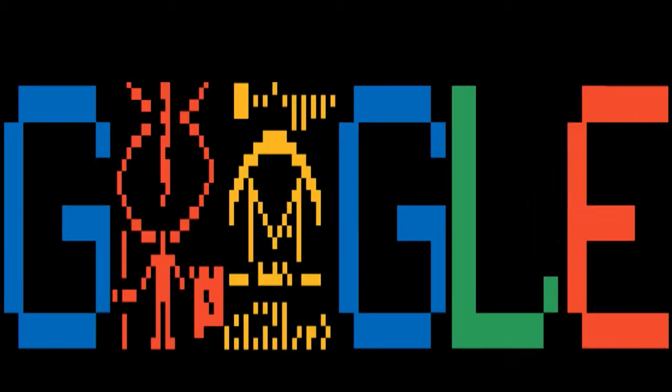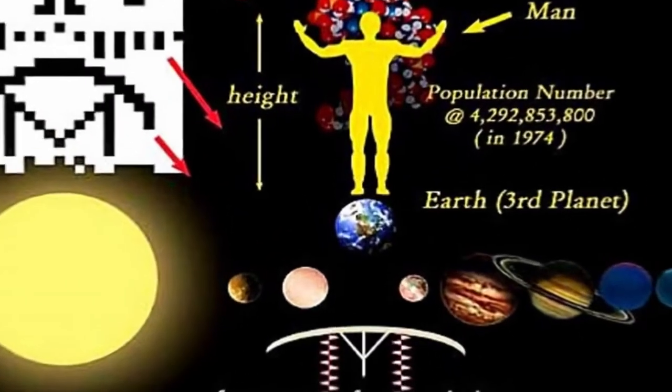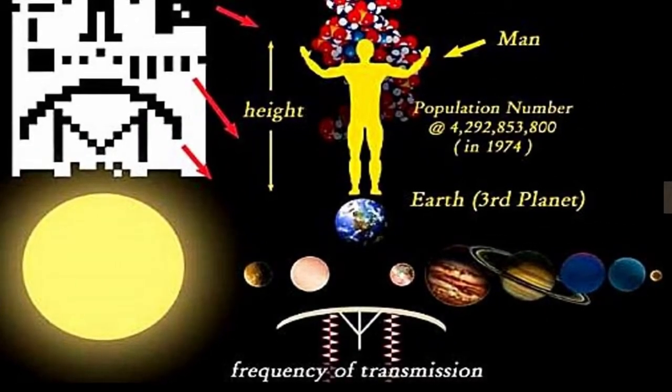Written with the assistance of Carl Sagan, the message could be arranged in a rectangular grid of zeros and ones to form a pictograph representing fundamental facts of mathematics, human DNA, planet Earth's place in the solar system, and a picture of a human-like figure as well as an image of the telescope itself.